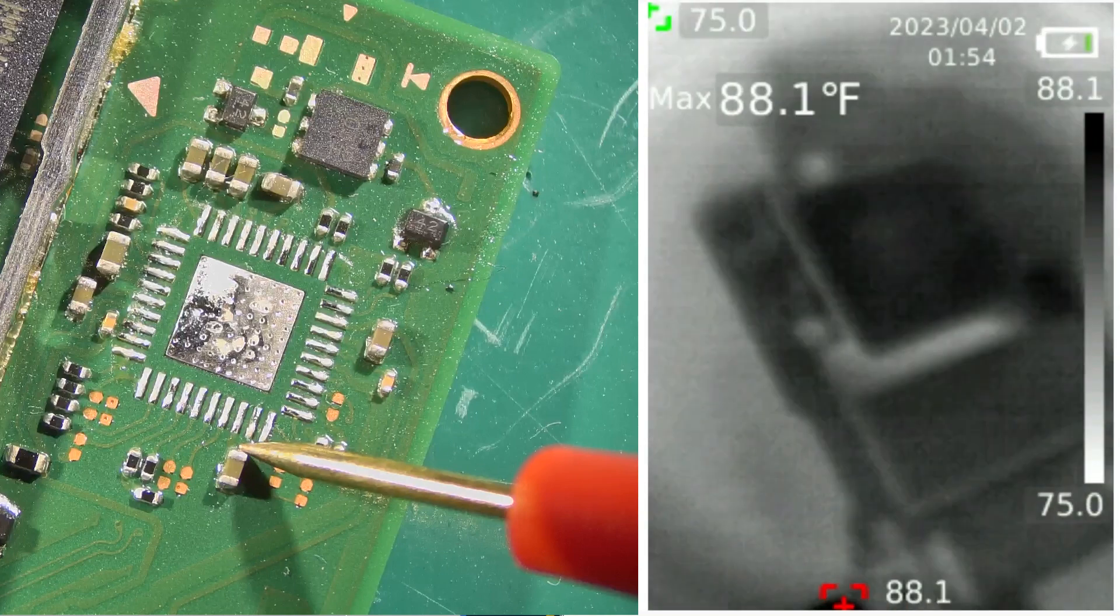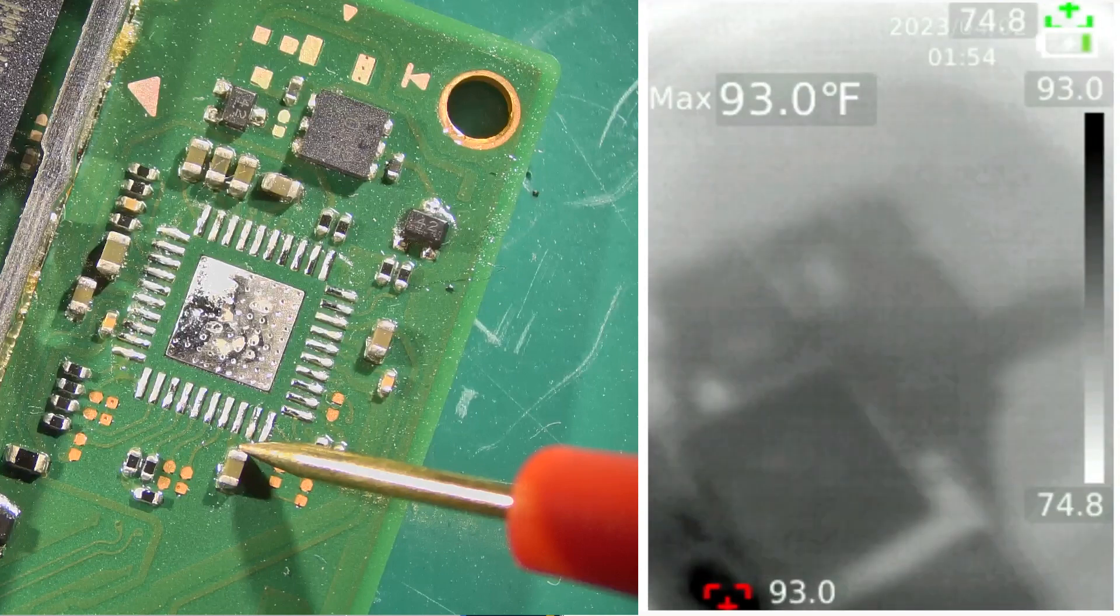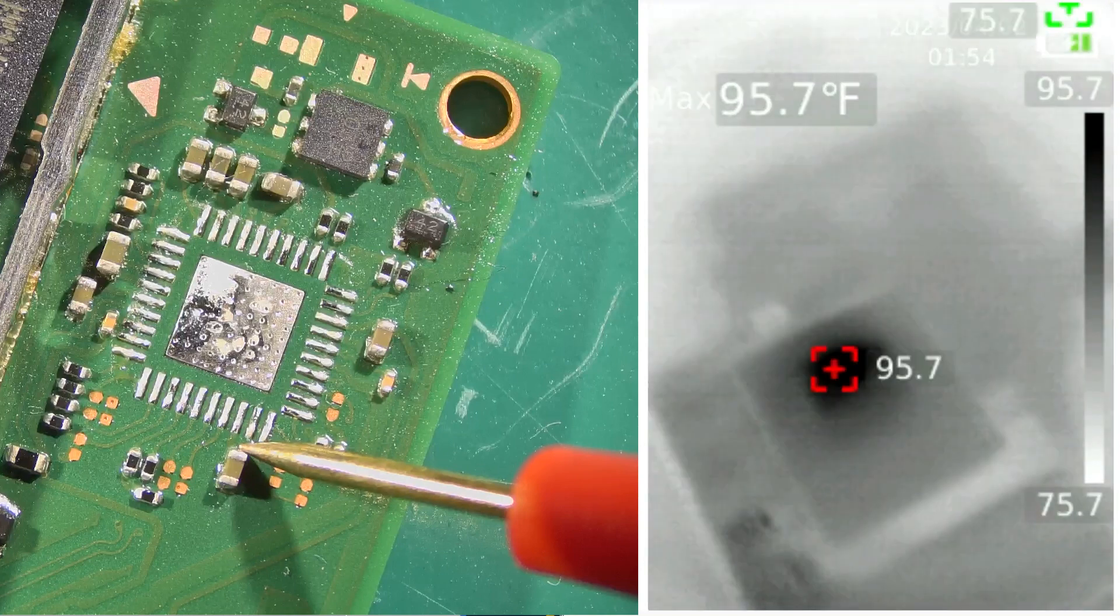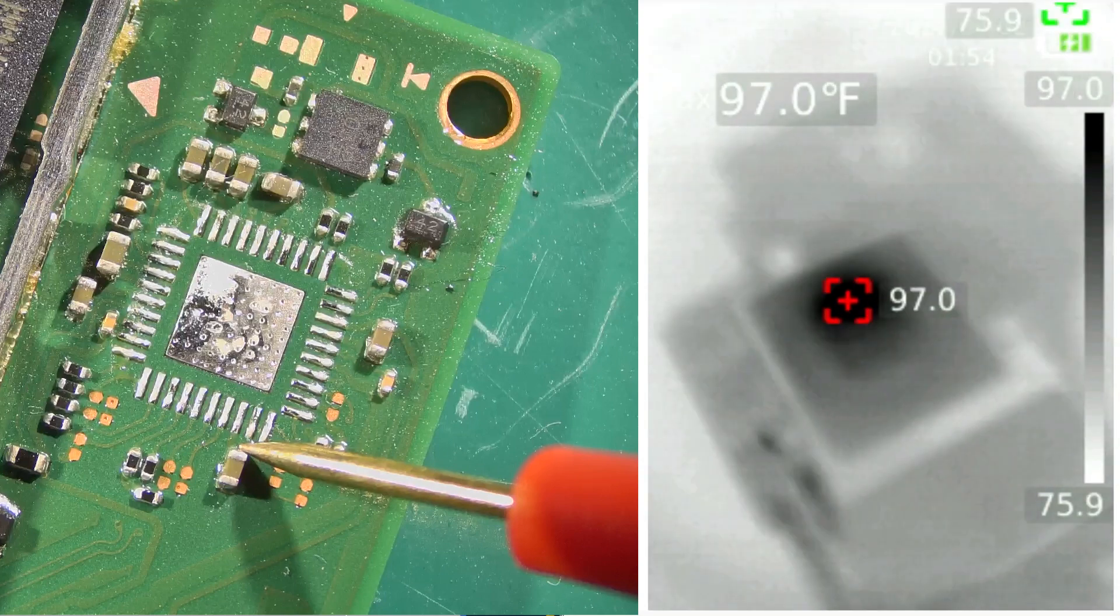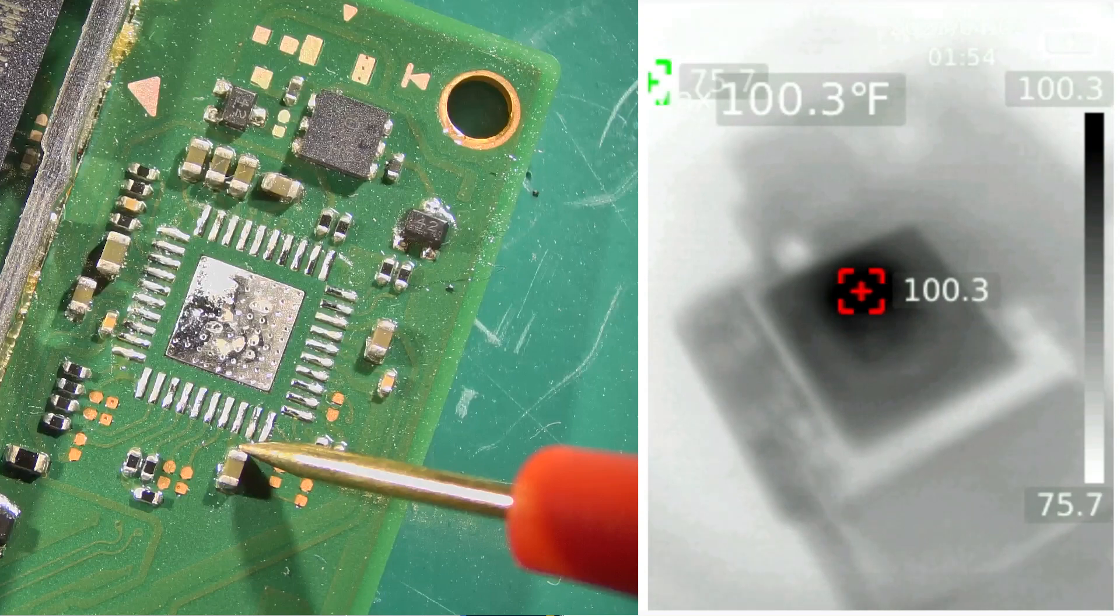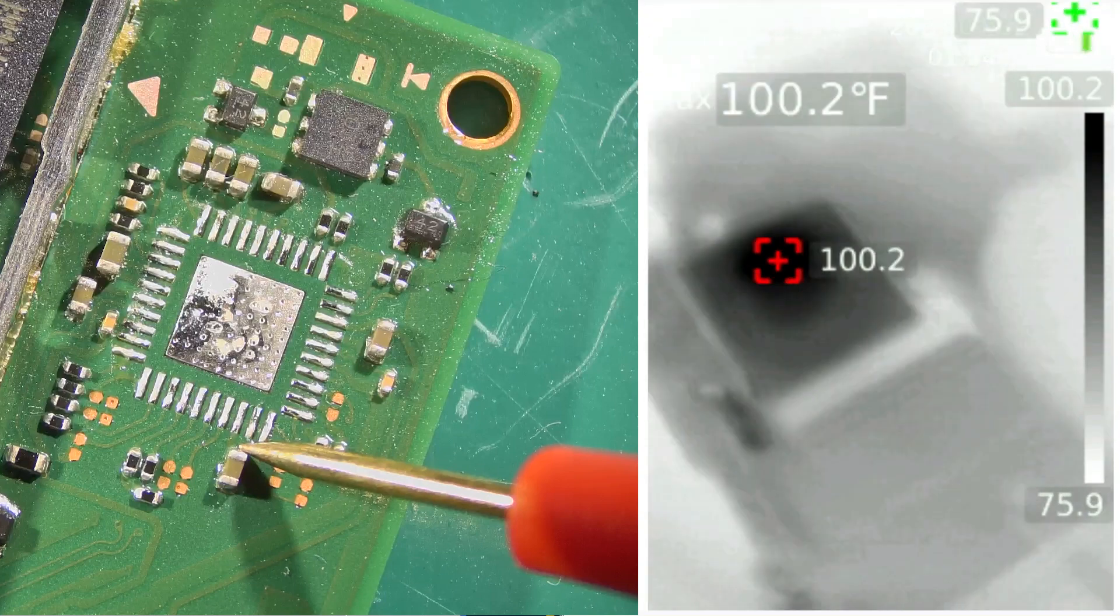We're going to take a look at the rest of the board under the camera here, just to make sure nothing else looks like it's getting hot. It's definitely looking like the CPU there is what's getting warm. You can see that's about 102 degrees there.